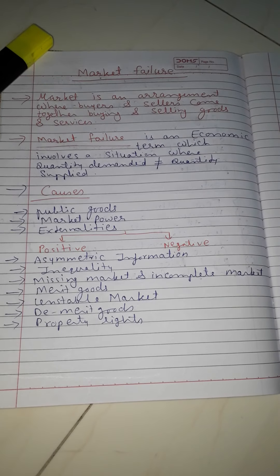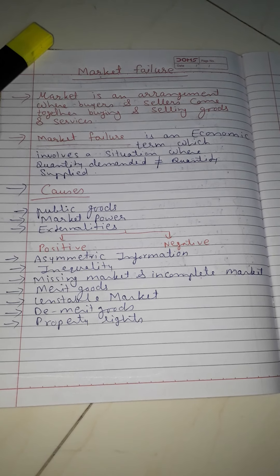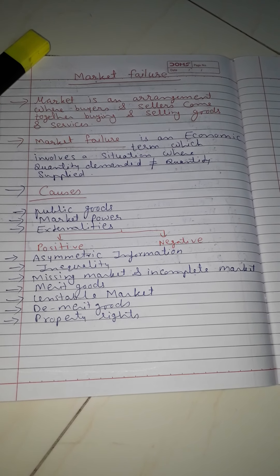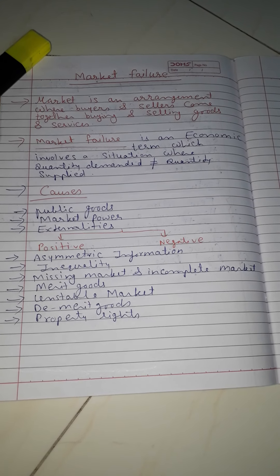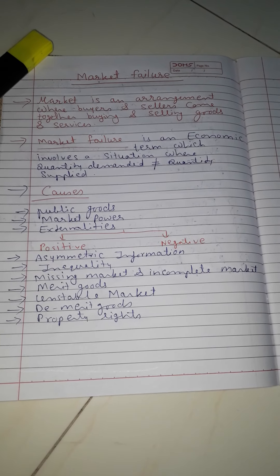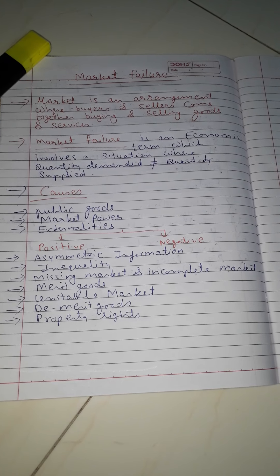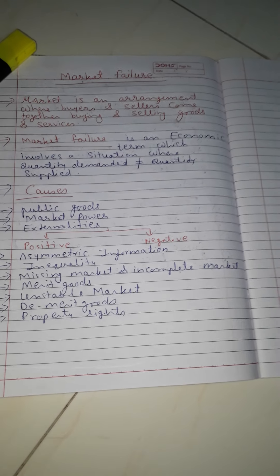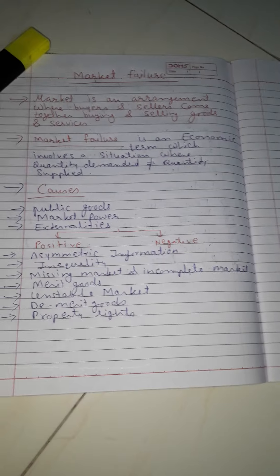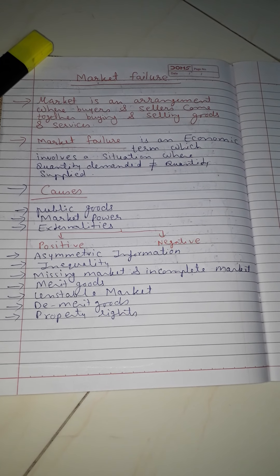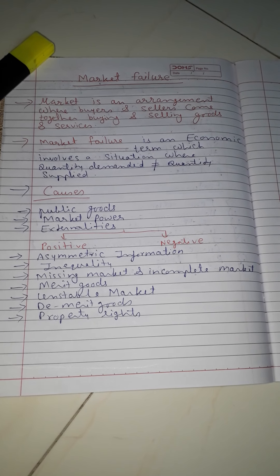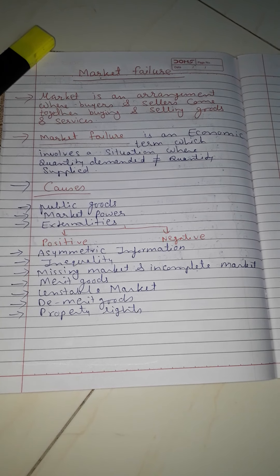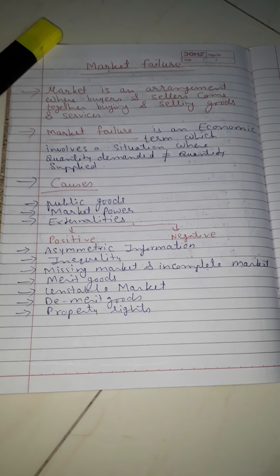Market control on the supply side is possible whenever the market is monopoly or monopolistic. Market control on the demand side is possible whenever the market is monopsony or oligopsony. Monopsony means many sellers and a single buyer, and oligopsony means many sellers and few buyers.